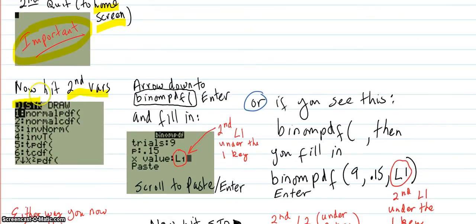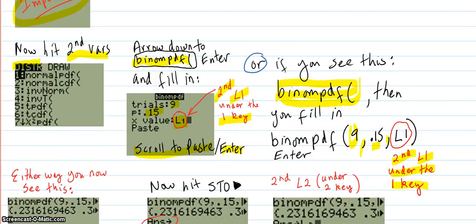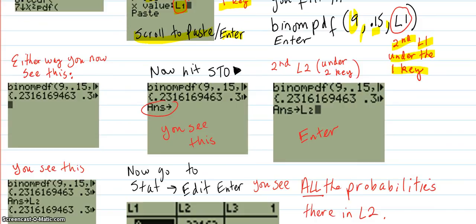Now that you've done that, now hit second vars to go to the distribution screen. Arrow down to the binomial PDF. Enter and fill in. That's nine point fifteen. But this time we're going to get them all. So you're going to paste in L1 right here. Where are you going to get that? That's from second L1, which is under the number one key. That's how you get an L1 to appear there. Then you're going to scroll to paste and you're going to enter. Or if you don't see that type of screen and you see this on the home screen instead, then you fill in your nine comma your point fifteen comma your L1, which you get the same exact way as previously. It's second L1 under the one key. So either way, you now see this on the home screen. You got all your probability numbers here.